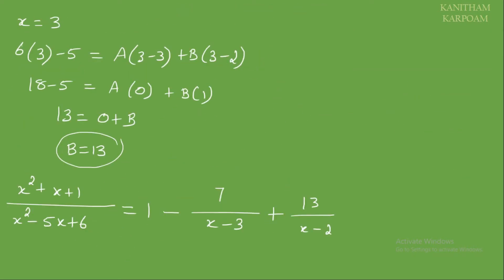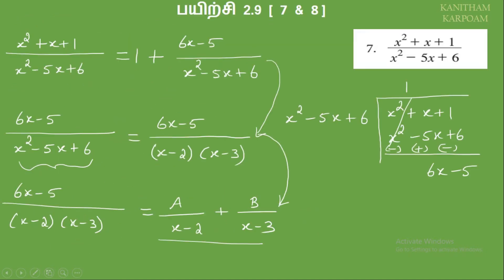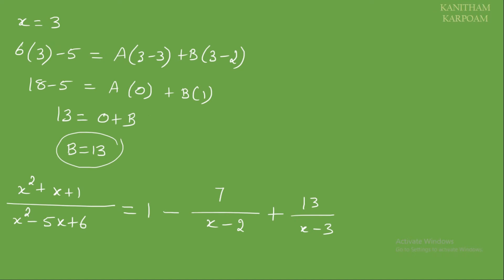A corresponds to x minus 2 and B corresponds to x minus 3. Substituting: A equals minus 7 and B equals 13.